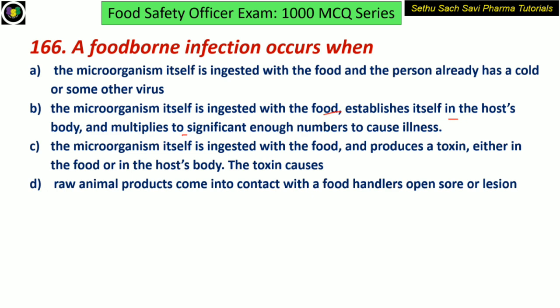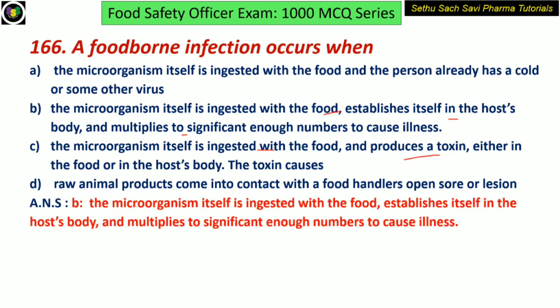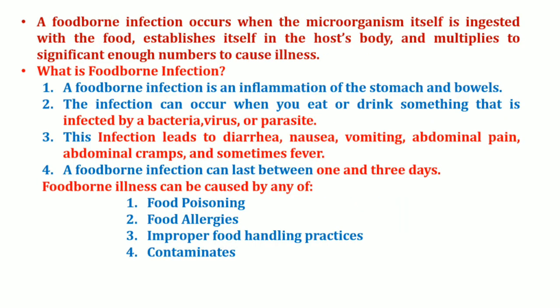Alternatively, the microorganism is ingested with the food and produces a toxin either in the food or in the host body, and the toxin causes illness. Or the raw animal products come in contact with food handlers, open sore, or lesion. The defining answer is: food-borne infection occurs when the microorganism itself is ingested with the food, establishes itself in the host body, and multiplies to a significant number that can cause illness.